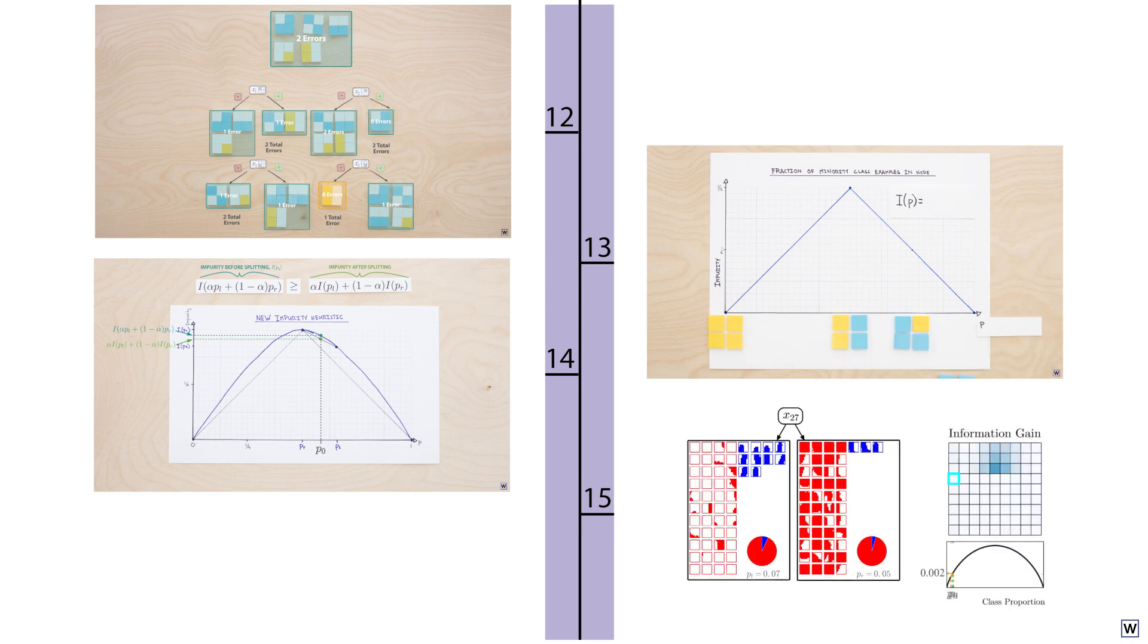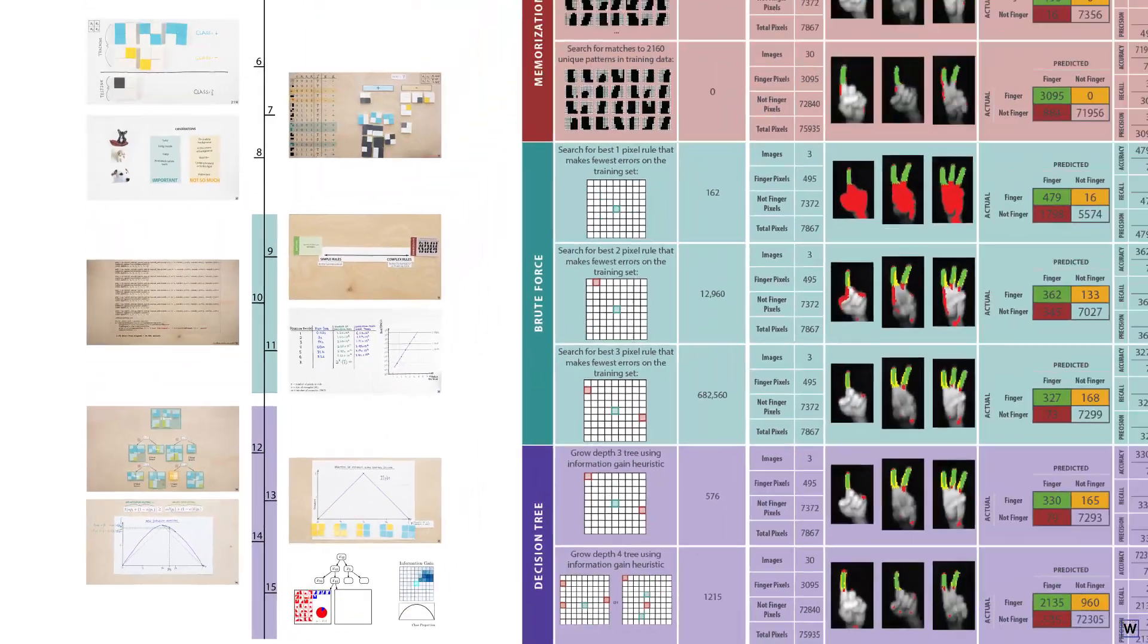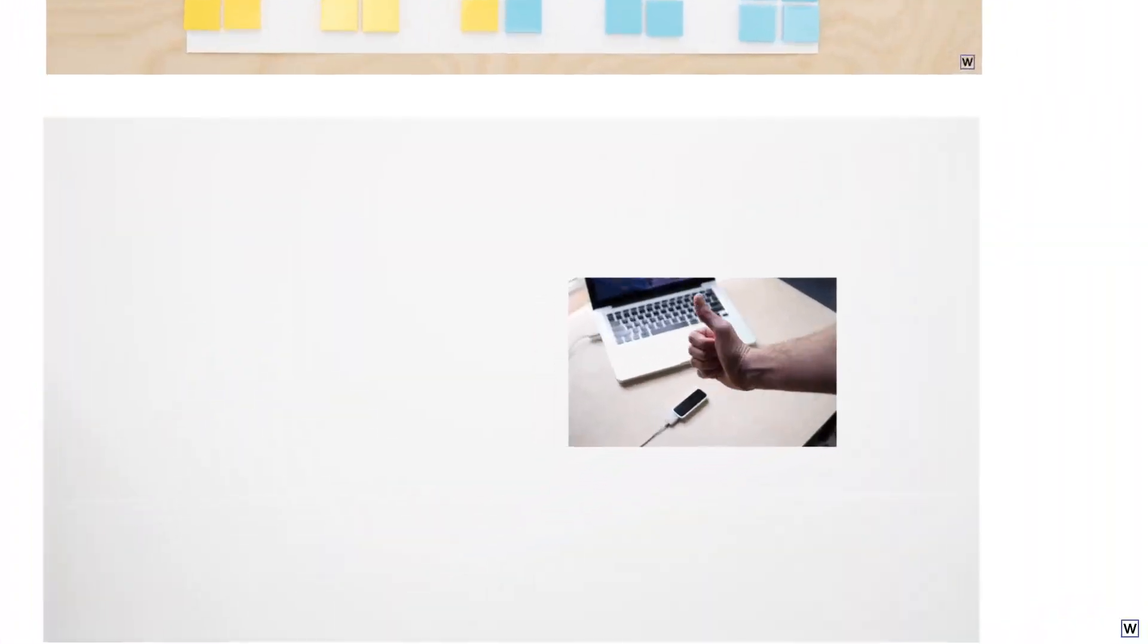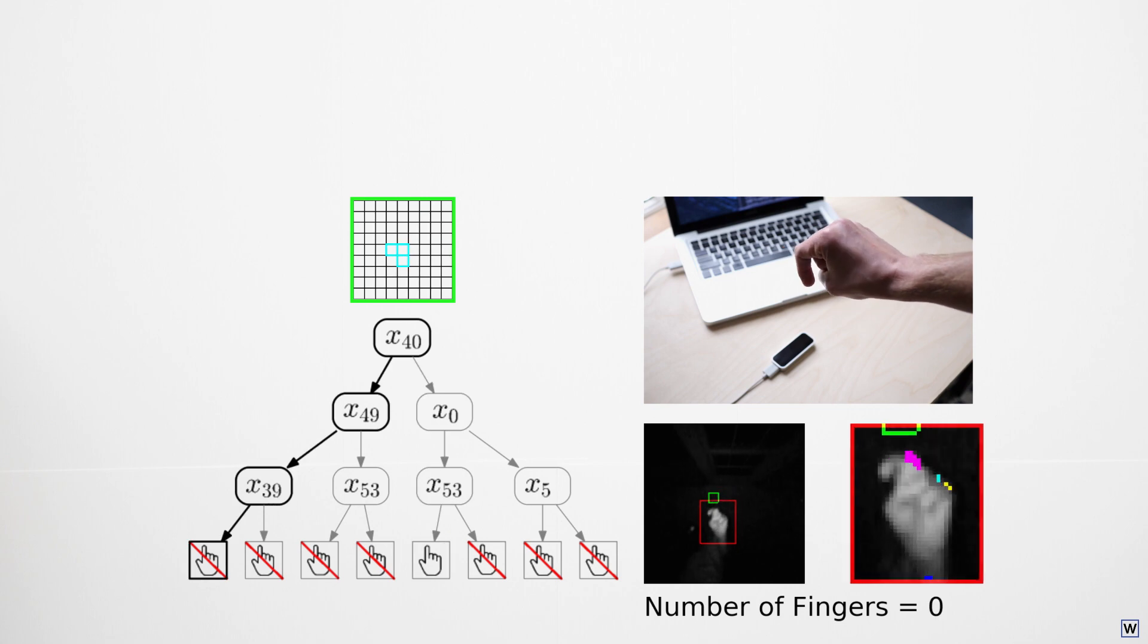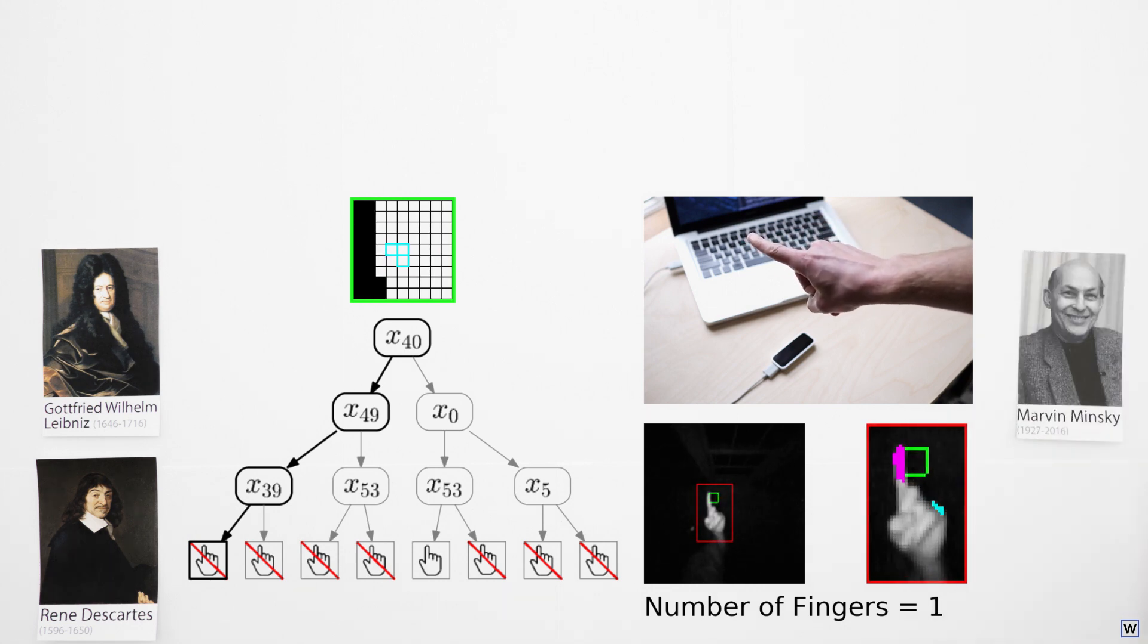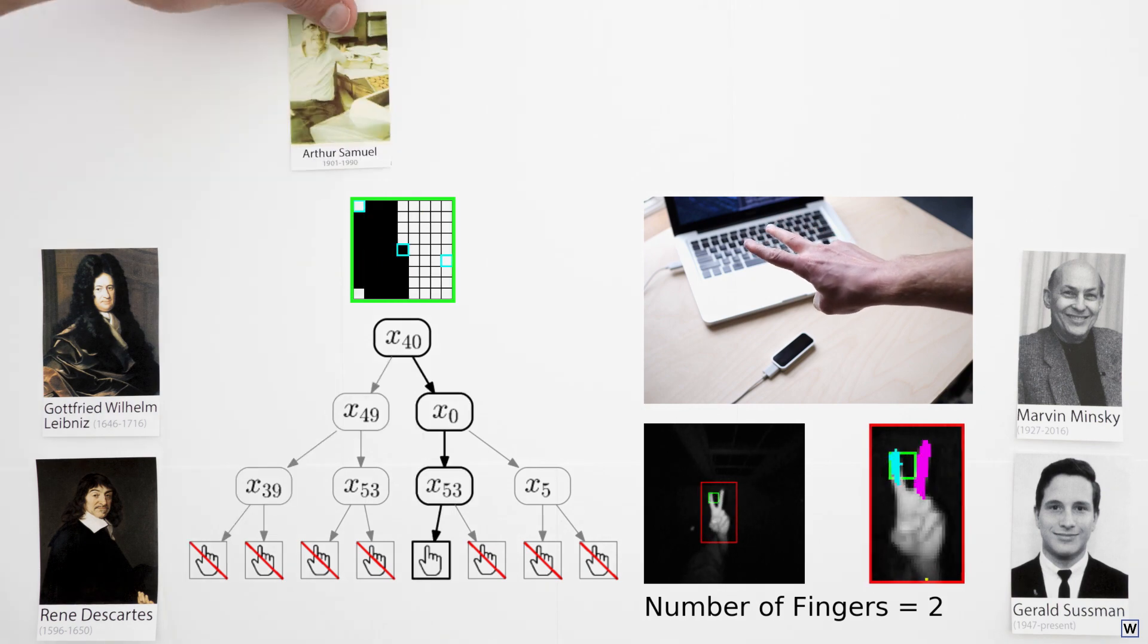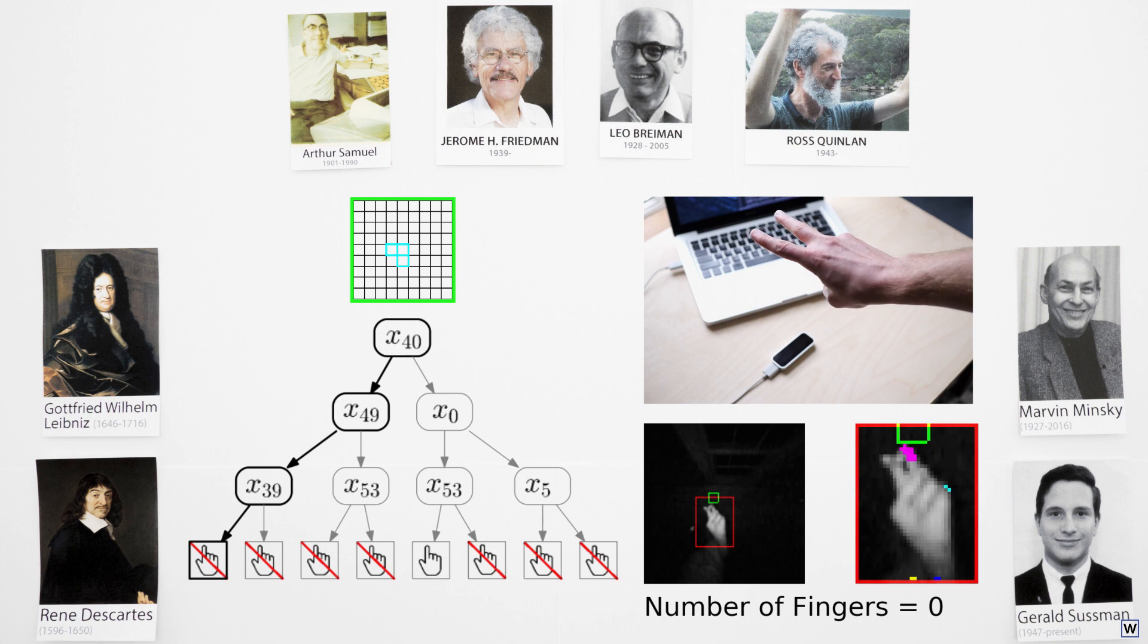Armed with these remarkable discoveries, we then trained our very own decision tree, allowing us to quickly find a rule that reliably identified finger pixels in images. And finally, using our new rule and a simple algorithm to group finger pixel detections together, we were able to accomplish something incredible. Something Leibniz and Descartes only dreamed of. Something Minsky and Sussman failed to accomplish. Something only made possible through remarkable discoveries in the fields of statistics and machine learning over the last 50 years.